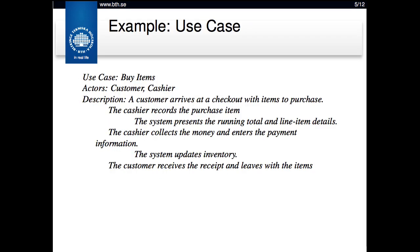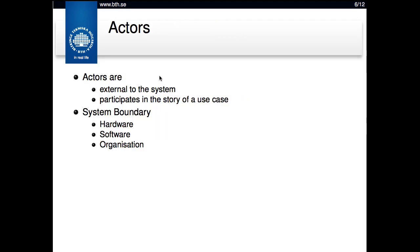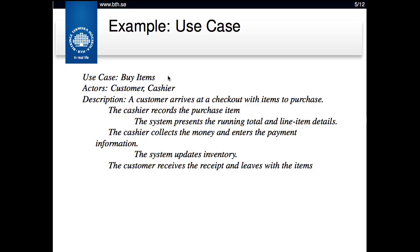Here is one example use case for the system — an overall use case that covers more or less the entire system functionality. The title is 'Buy Items.' The actors involved are customer and cashier. The description is that the customer arrives at the checkout with items to purchase, and the cashier records the purchase item. The system presents a running total and details about what was just registered. The cashier collects money, enters payment information, and the system updates inventory. Ultimately, the customer receives the receipt and leaves with the items. This would then be broken down into smaller use cases focusing on each of these steps.